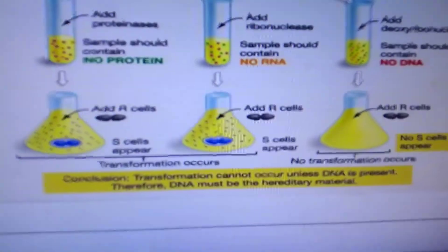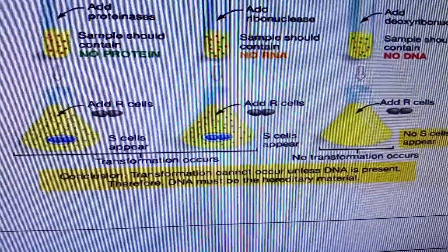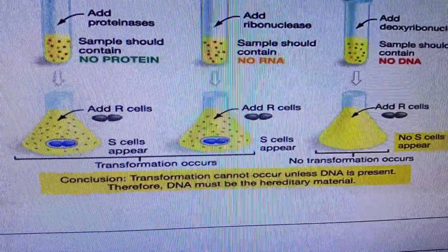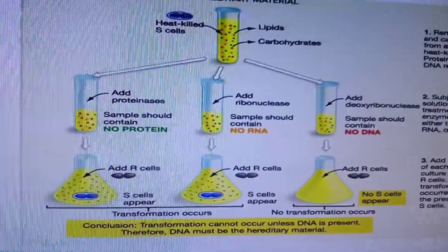The conclusion was: transformation cannot occur unless DNA is present. Therefore, DNA must be the hereditary material.